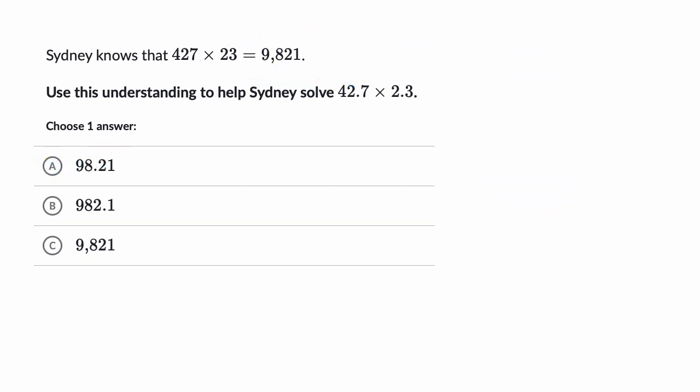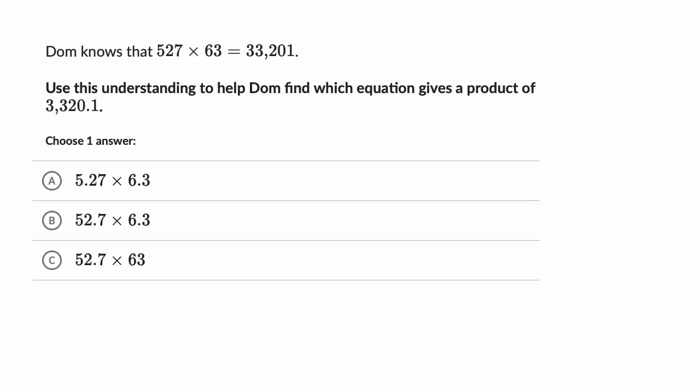Let's do another example here. So we are told that Dom knows that 527 times 63 is equal to 33,201. Use this understanding to help Dom find which equation gives a product of 3,320.1. Pause this video and think about that.